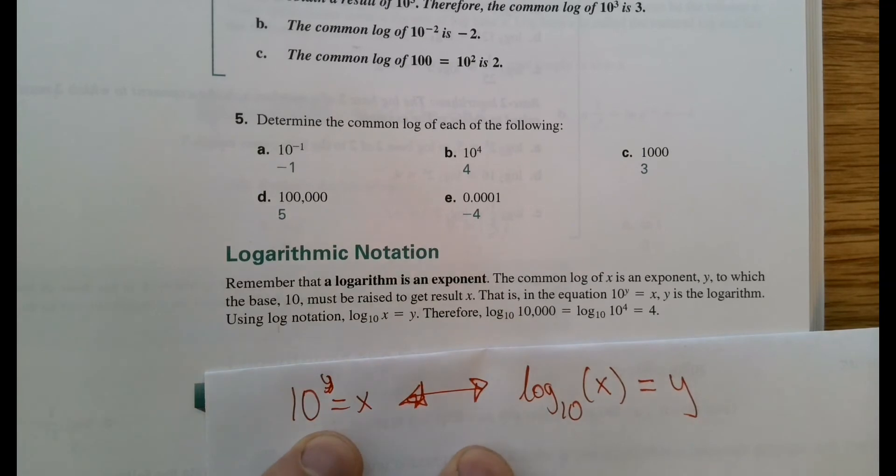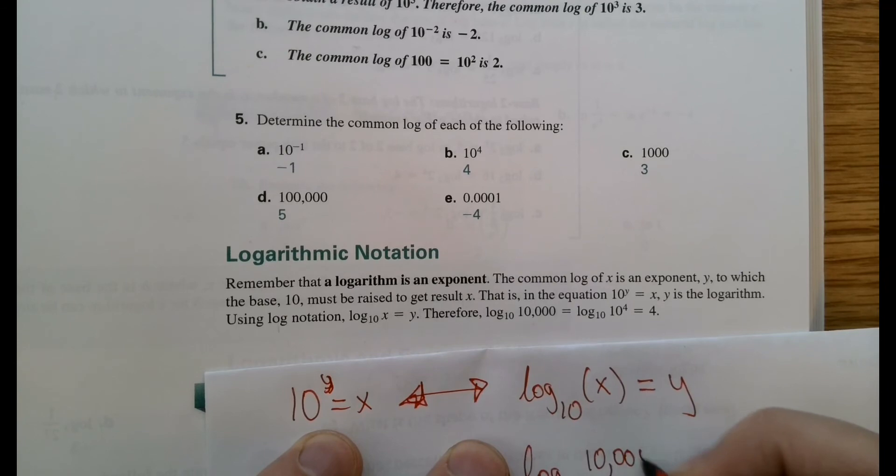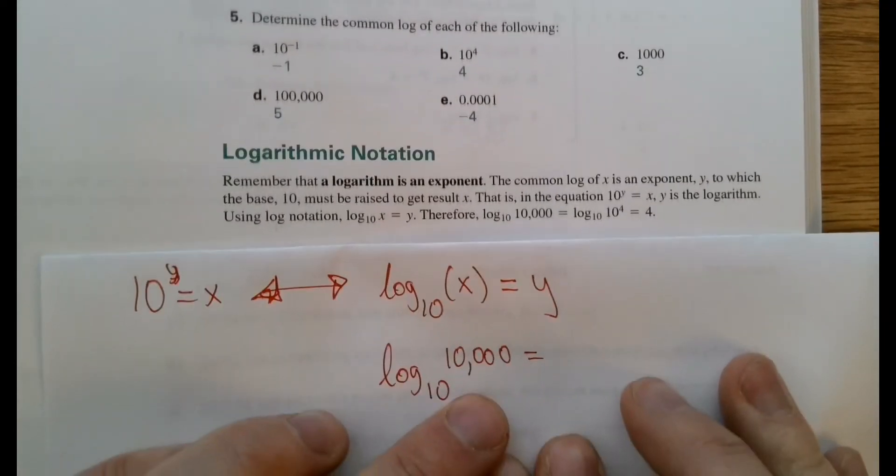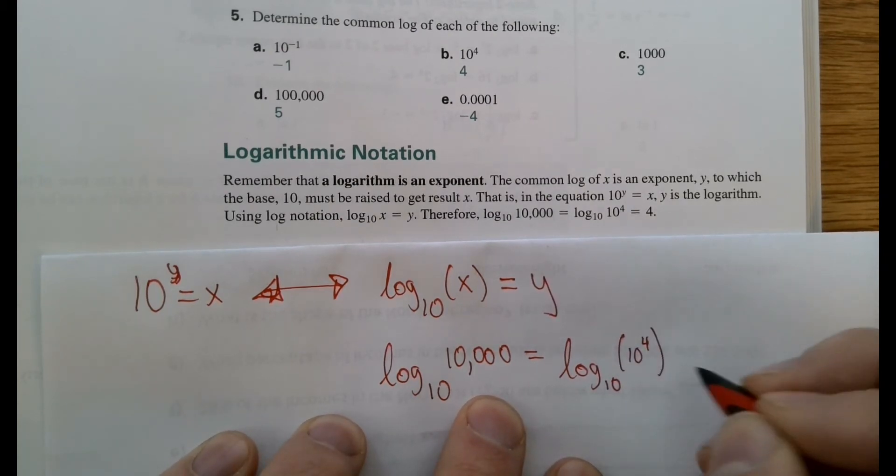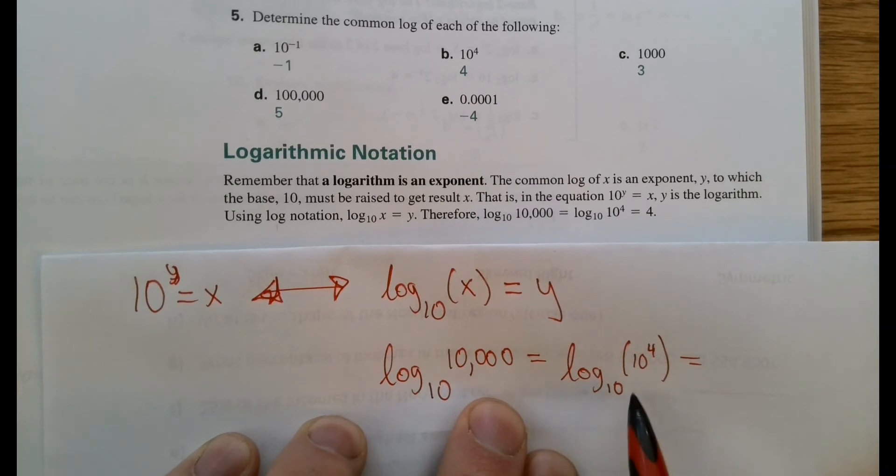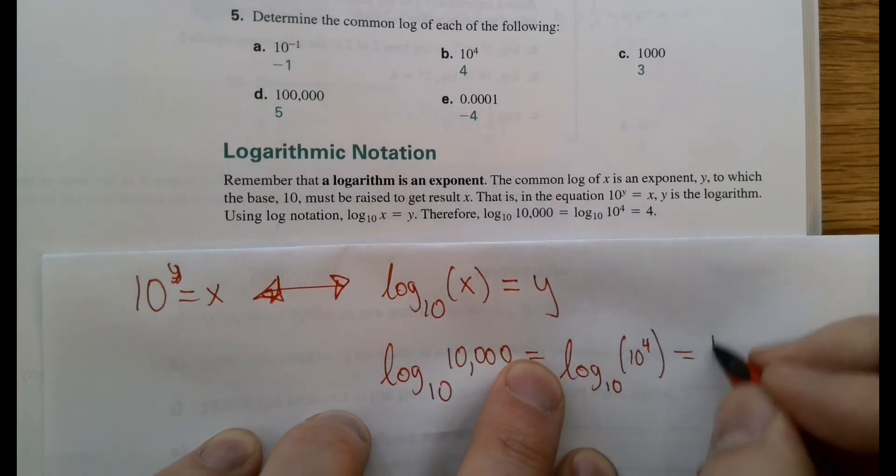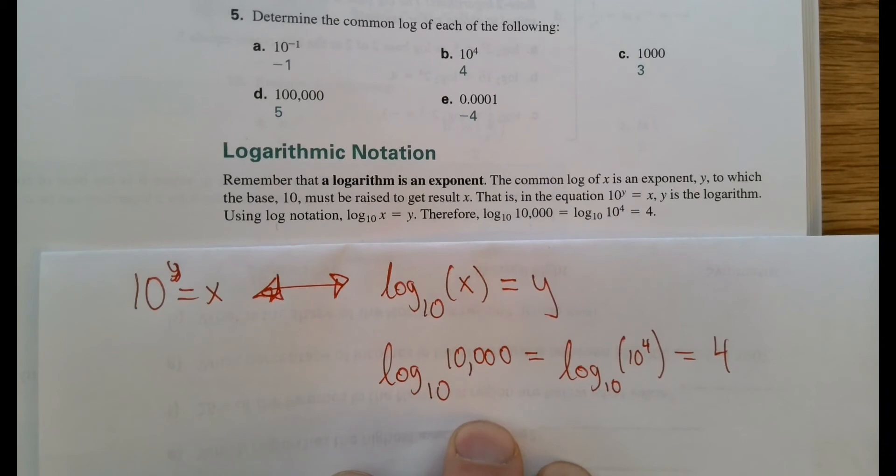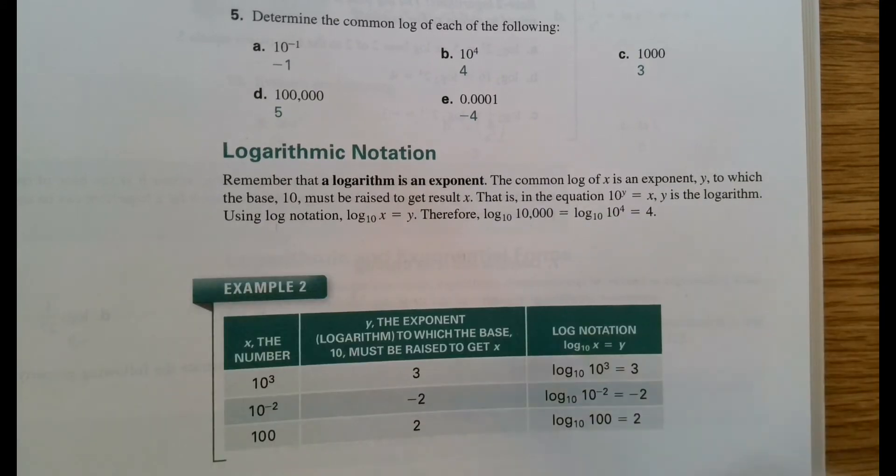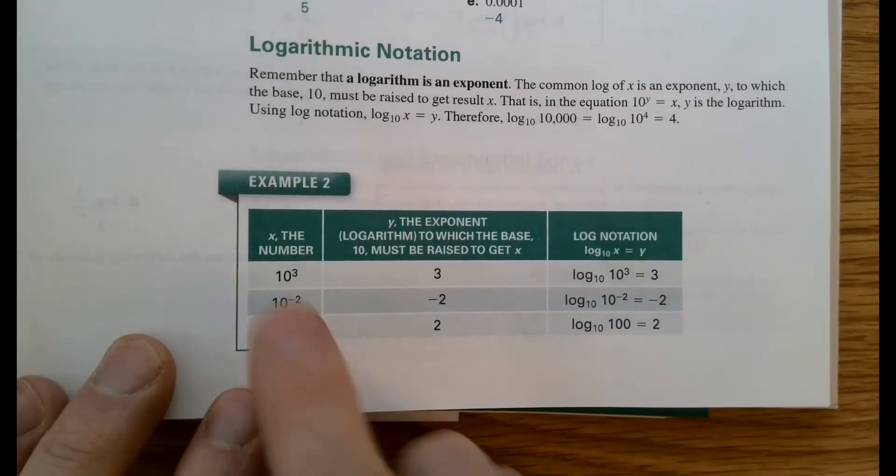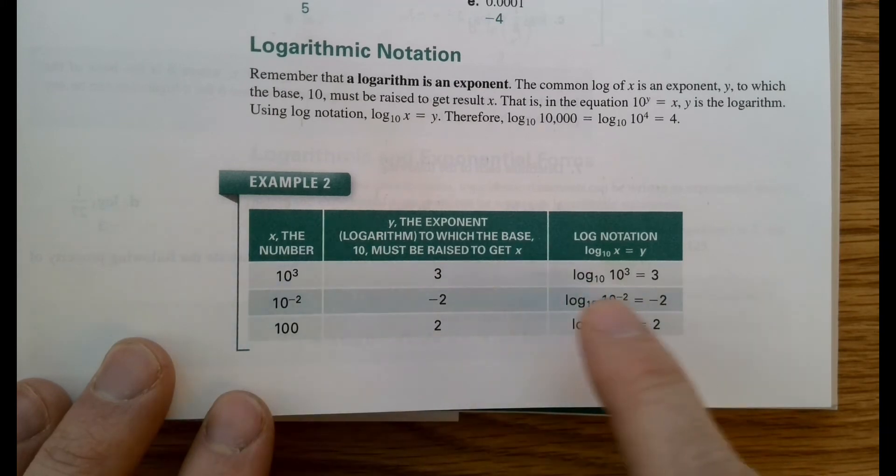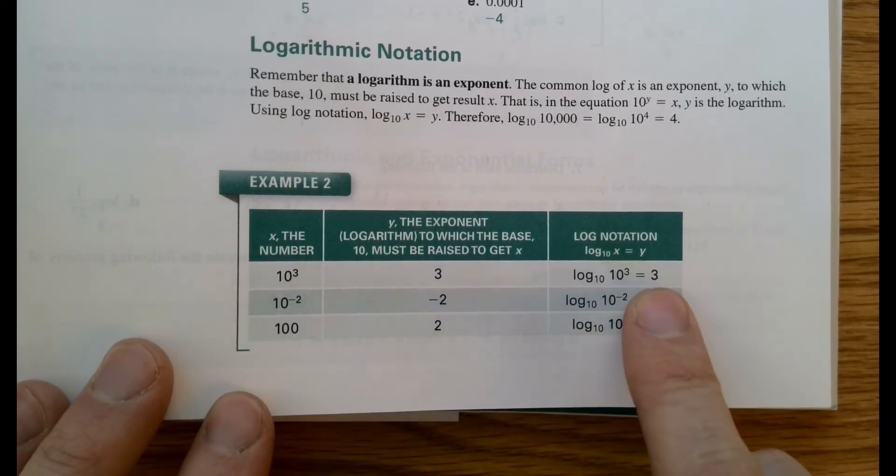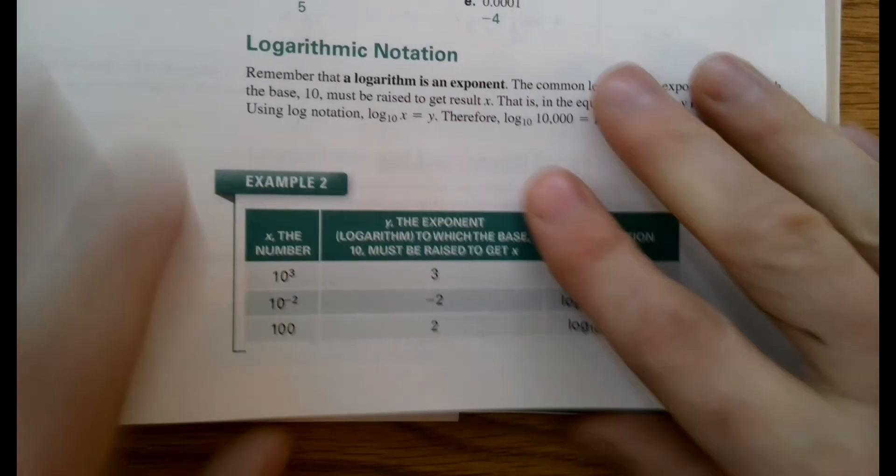So I like the example here. When we take log base 10 of 10,000, that's really log base 10 of 10 to the 4th power. And since we know that the common log of a base 10 is equal to its exponent, that would be 4. So here's a quick example. 10 to the 3rd, its exponent is 3. So the common log of 10 to the 3rd is 3.